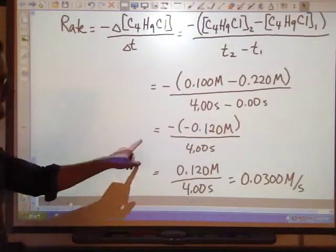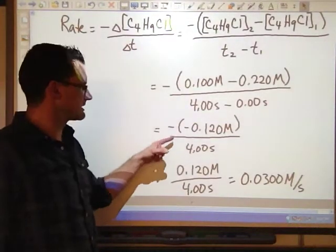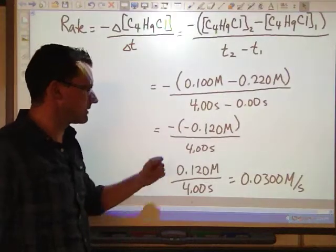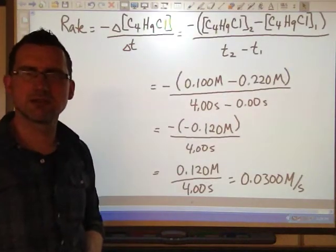I end up with a final answer, 0.120 molar. You can see what the negative does here. It's taking that negative amount. The negative of a negative equals positive. It's the only time in life when two wrongs make it right.